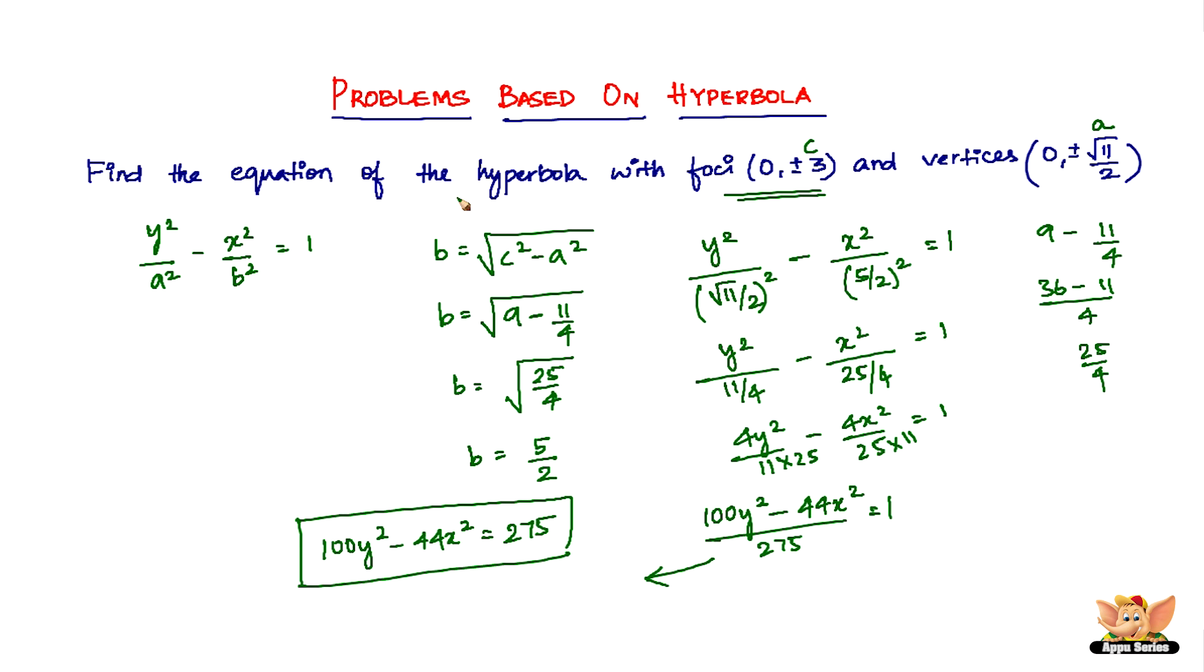But before I end the video, let me quickly brief you through the problem again. The most important thing you will have to understand from this problem is that it all depends upon how you analyze what form of the hyperbola we are looking at. For that you need to really see the coordinates of the foci or the vertices to see if the value of c and a are on the x-coordinate or the y-coordinate.